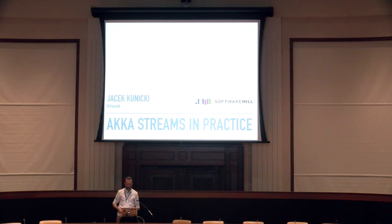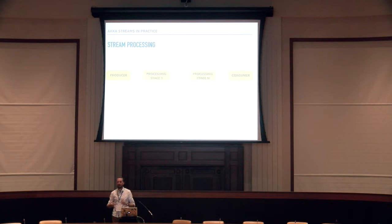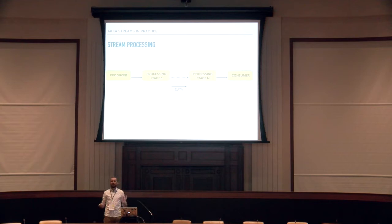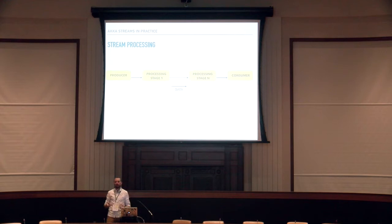Akka Streams is basically about stream processing. In a stream processing architecture, it's pretty simple: you have a source of data you want to process, a target for your data you can call a consumer, and a number of processing stages where you do something with your data. In a traditional stream processing architecture, the data flows from the producer to the consumer. The first scenario is when the producer is slow and the consumer is fast — in such a scenario you basically have no problems.